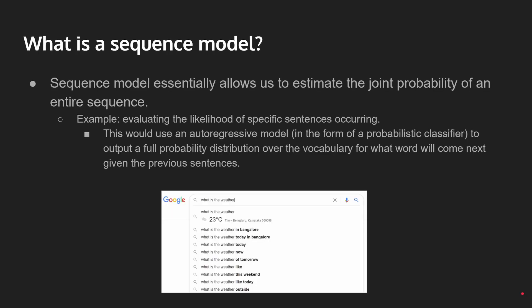Now let's talk about sequence models. A sequence model essentially allows us to estimate the joint probability of an entire sequence. For example, evaluating the likelihood of specific sentences occurring — when you do a Google search, it evaluates what's likely to be typed next. This uses sequence models and will use an autoregressive model in the form of a probabilistic classifier, since we're doing classification, to output a full probability distribution over the vocabulary for what word or phrases will come next given the previous sentences.